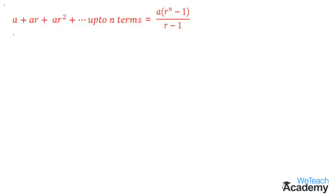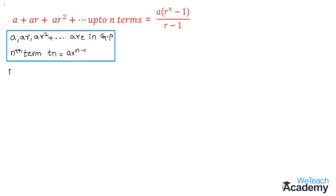First we have to find the nth term of the series. We know that if a, ar, ar squared, and so on are in geometric progression, then the nth term, which is P(n), is given by ar to the power n minus one. So let us consider the given series as P(n): a plus ar plus ar squared, and so on, where the nth term is ar to the power n minus one, equal to a into r to the power n minus one divided by r minus one. Let us consider this as equation one.